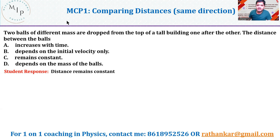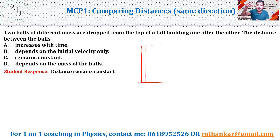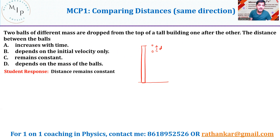The first problem described here tells you: two balls of different masses are dropped from the top of a tall building one after the other. You have a tall building, and from the top you drop one ball, and then after some time you drop the second one. The distance between the balls — what will happen to it? Will it increase with time? Does it depend only on the initial velocity? Does it remain constant? Does it depend on the mass of the balls?